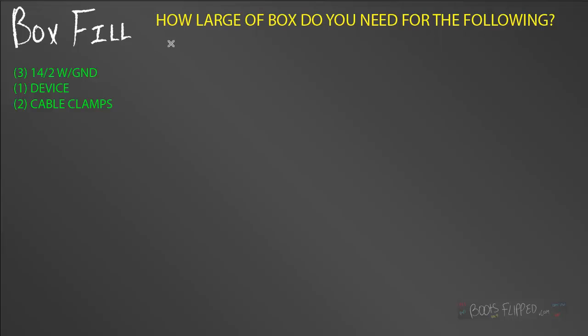In this box, I want to know how large of a box I need. So, I have three 14-2s with a ground, one device, and two cable clamps in this box. Well, let's remember that number 14 is from our table. Number 14s, they equal two cubic inches per conductor. So, let's get into our calculation. Follow along. You can do it however you want, but I try to stay organized with my calculations. That way, I don't lose something in the process.